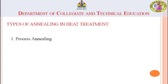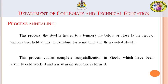The types of annealing in heat treatment are: process annealing and full annealing. In process annealing, the steel is heated to a temperature below or close to the critical temperature, held at that temperature for some time, and then cooled slowly.